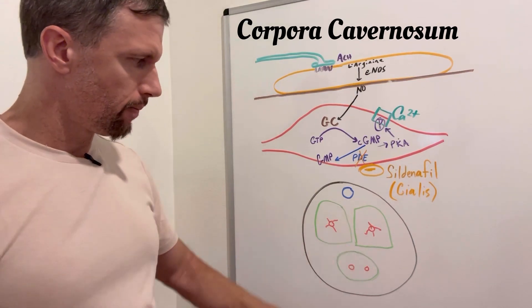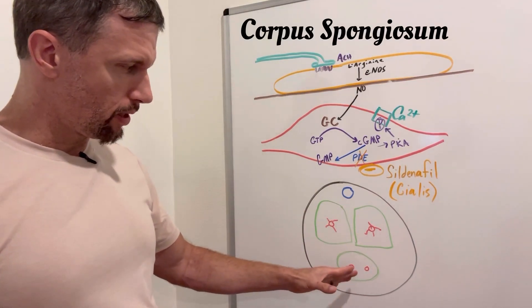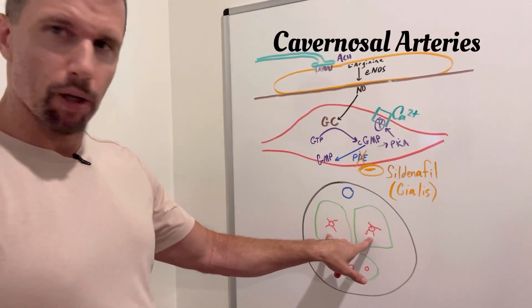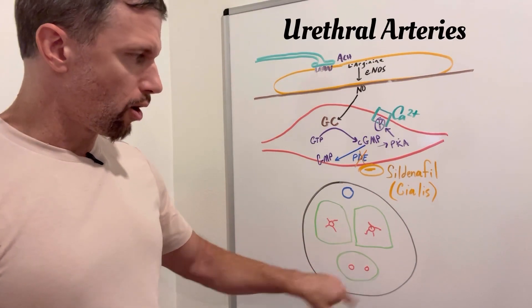We have the corpora spongiosum, which is another spongy tissue, and we have the cavernosal arteries here bringing blood into the penis, and we also have urethral arteries here.